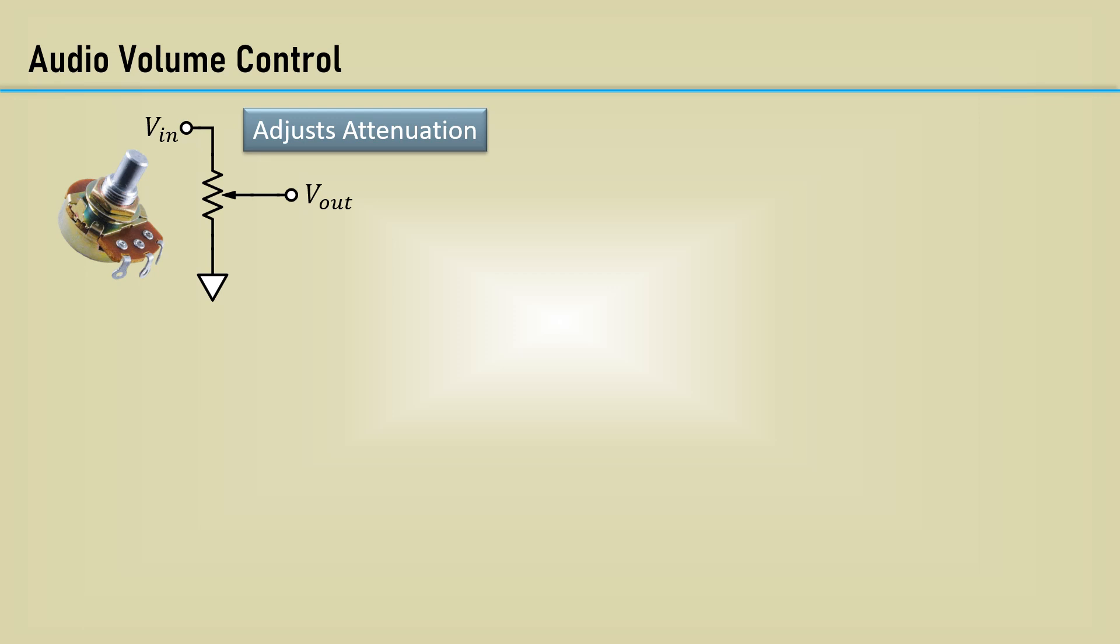Here's a general purpose audio volume control. It's usually an audio or logarithmic taper pot. It's a simple resistive divider. You only get attenuation.